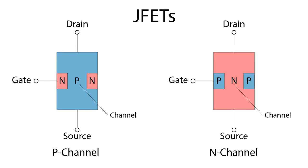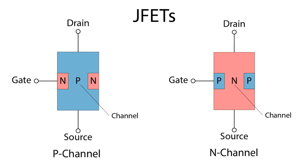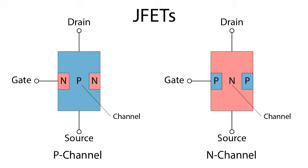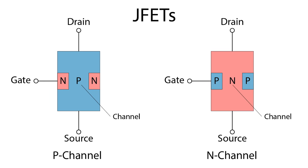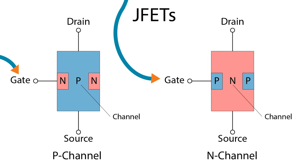JFETs are named for which type makes up the channel: P-channel JFETs and N-channel JFETs. The current flowing through the channel can be controlled by varying the voltage at the gate.